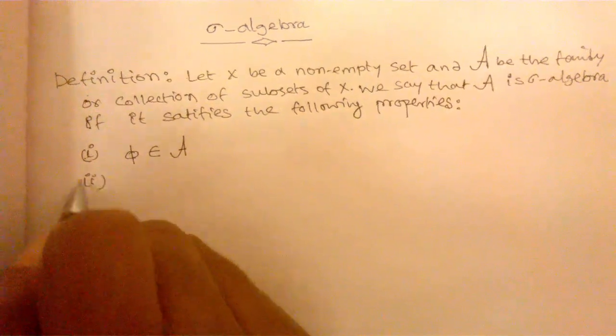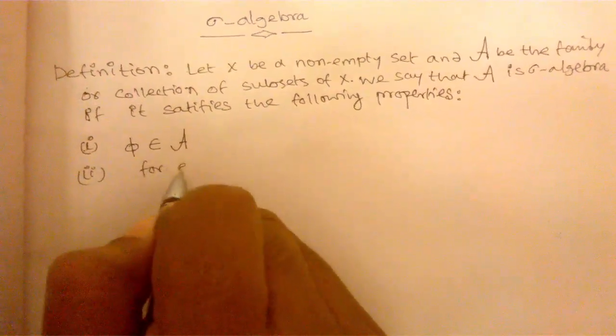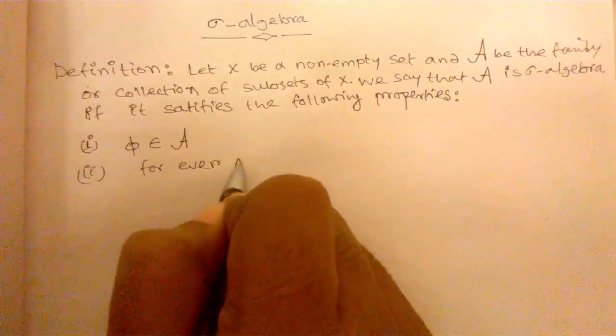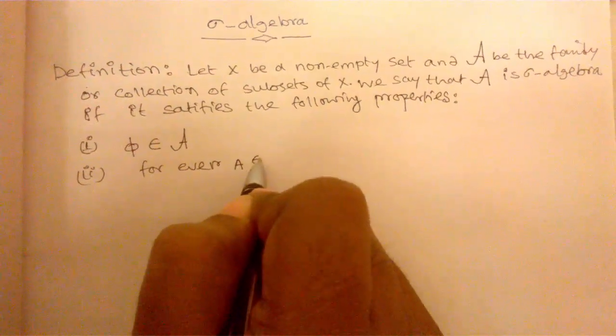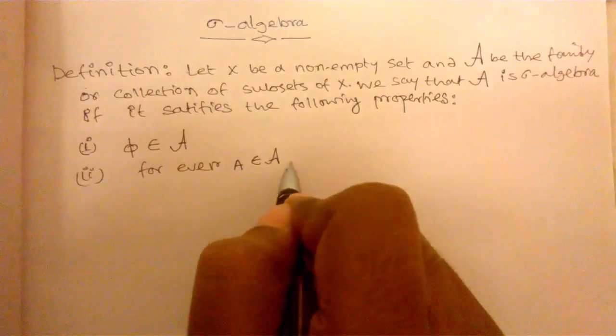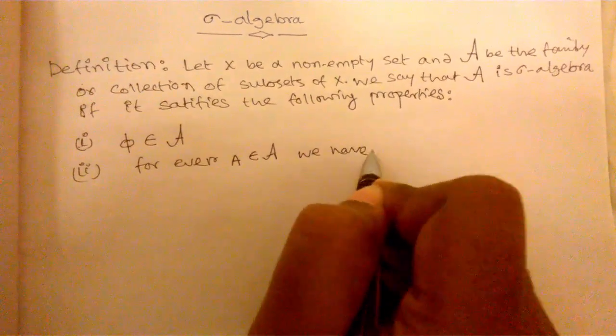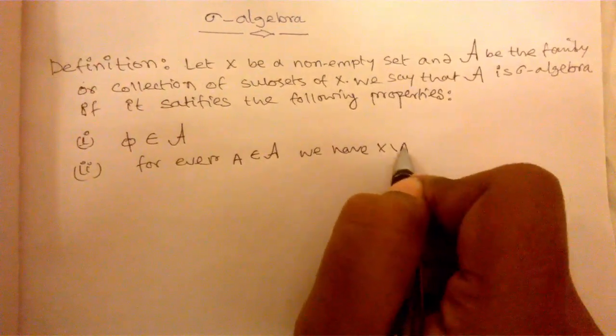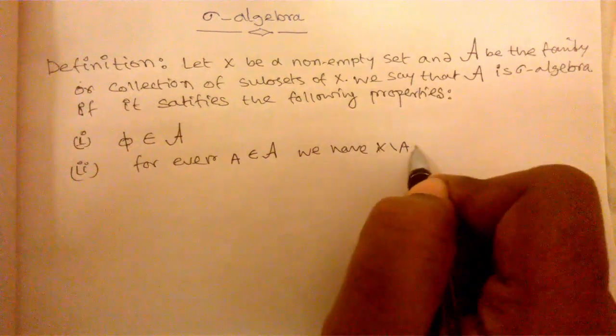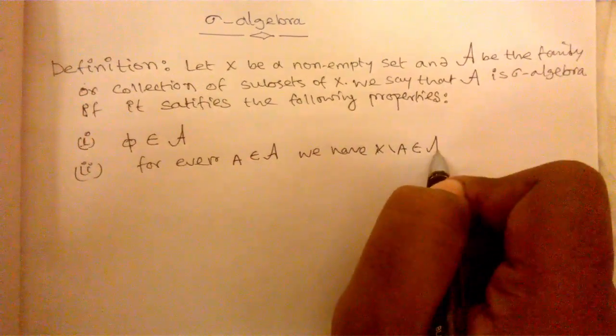Number 2, for every subset A belongs to A, we have X minus A belongs to the collection A.